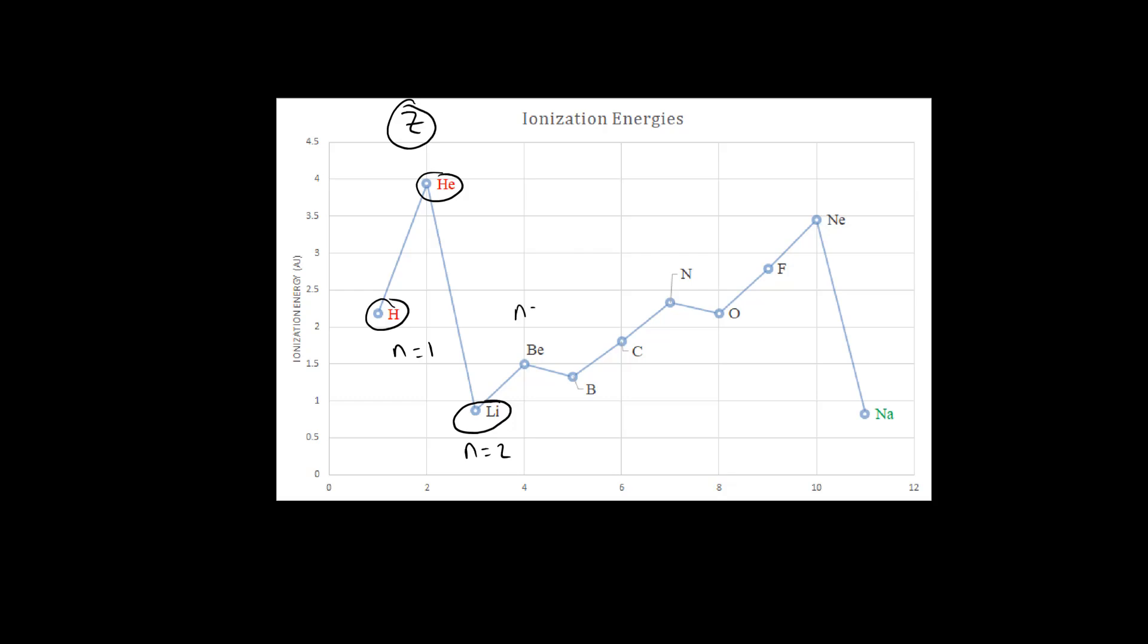Still within the second shell, we move to beryllium, and beryllium has a larger ionization energy, which is expected because lithium has an atomic number of three, whereas beryllium has an atomic number of four. So more protons mean that the ionization energy should be larger because the potential energy is more negative.